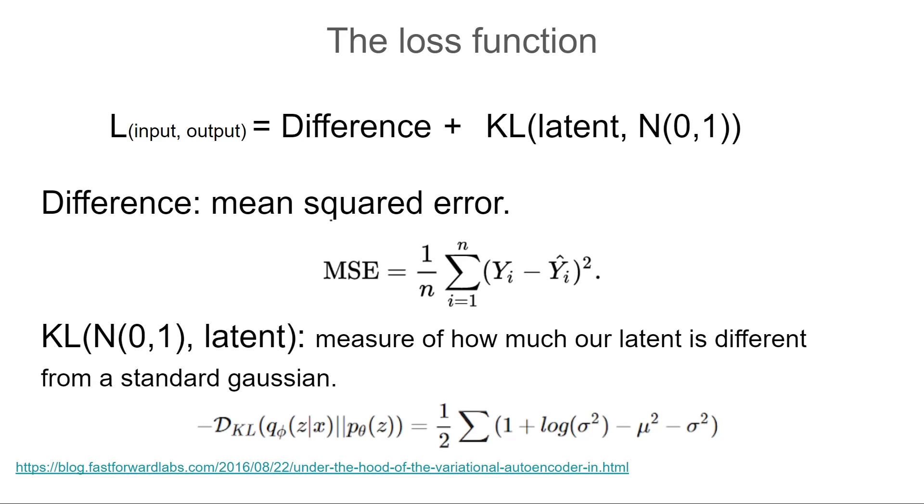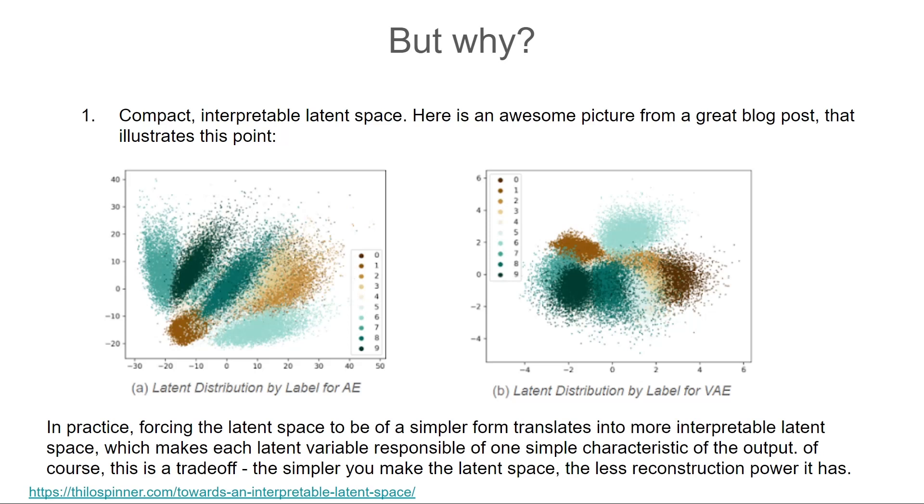It's highly recommended for those who want to get deeper into the theory. The reason we want to keep our means and variances in check is that it will help us to get a compact and interpretable latent space. Here is an awesome picture from a great blog post that illustrates this point. In practice, forcing the latent space to be of a simpler form translates into a more interpretable latent space, which makes each latent variable responsible for one simple characteristic of the output. Of course this is a trade-off. The simpler you make the latent space, the less reconstruction power it has.